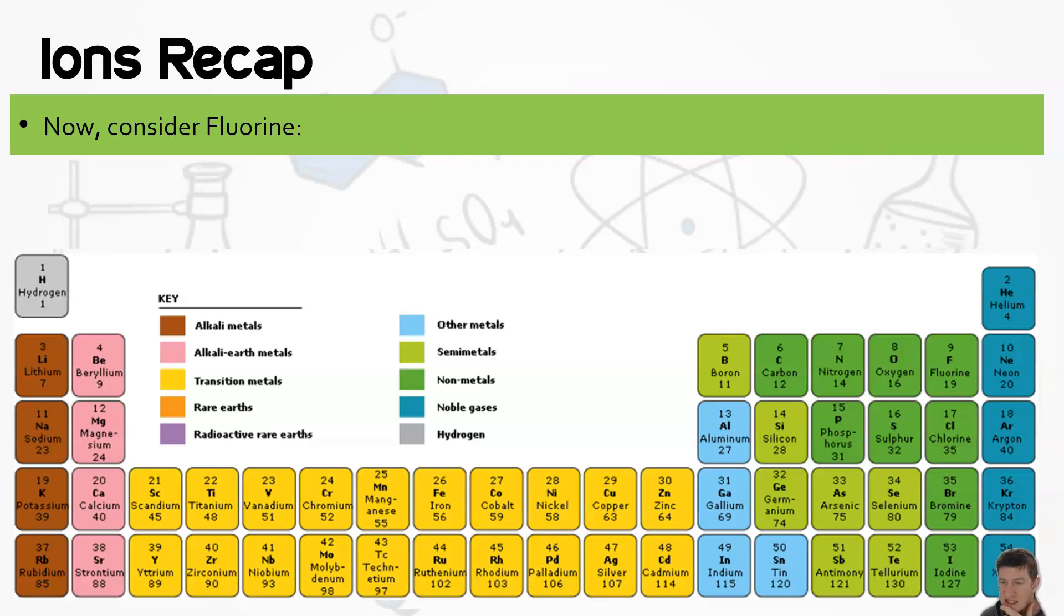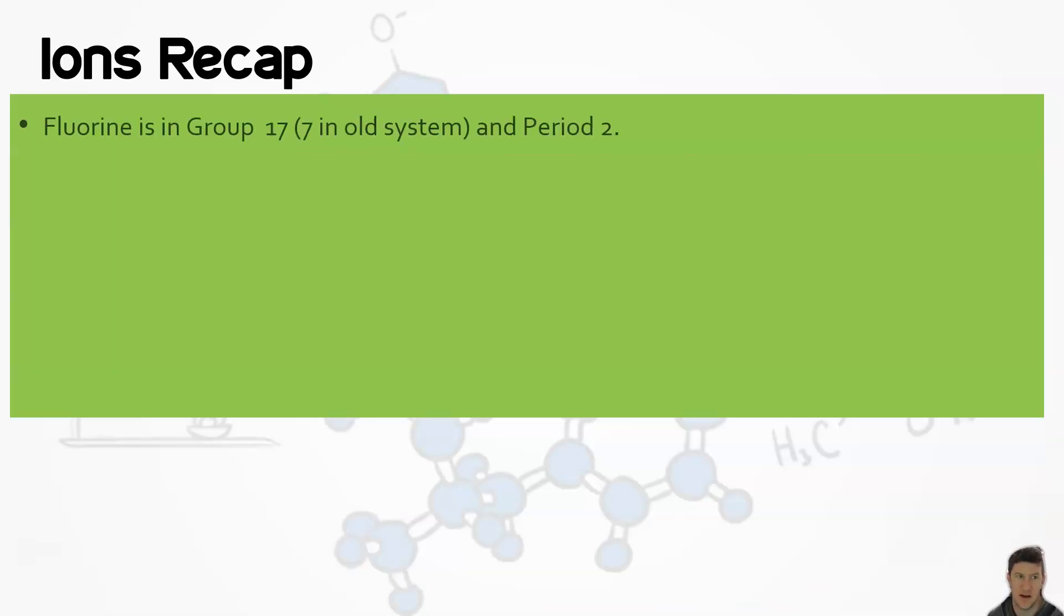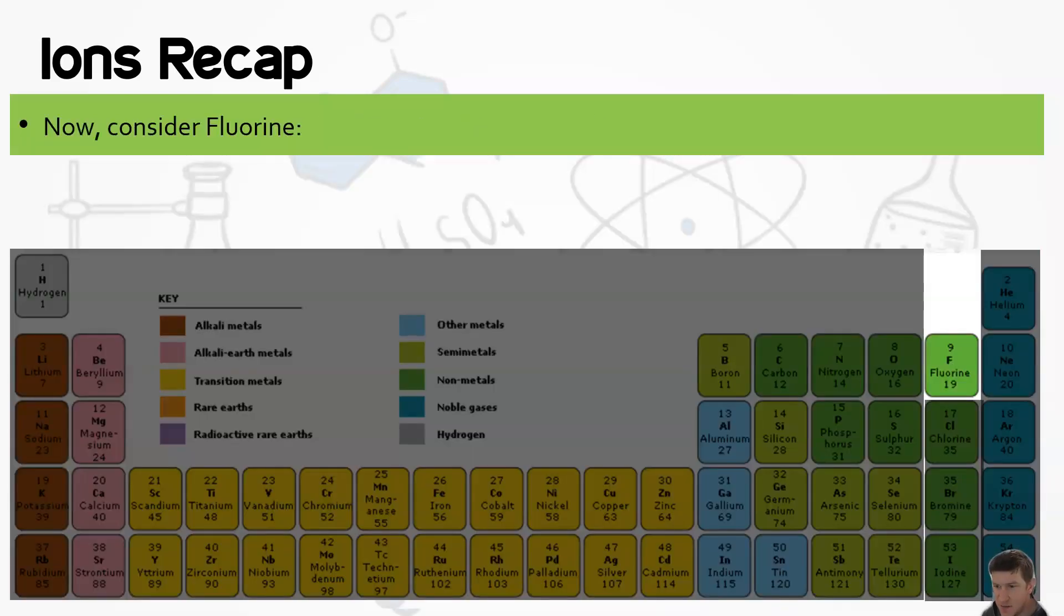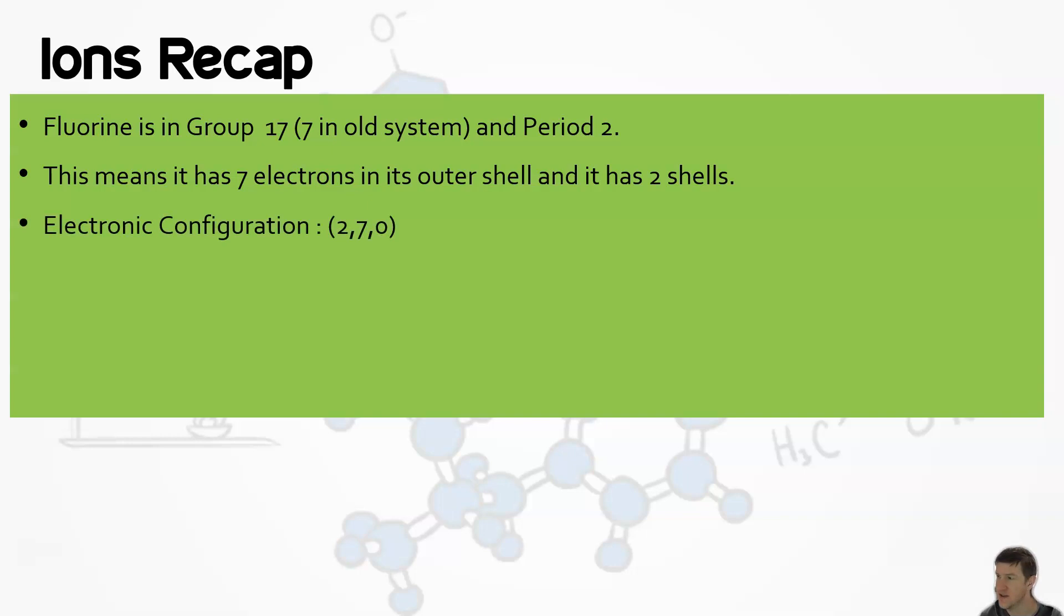So let's look at some examples. Let's consider fluorine. Fluorine is over here, number nine. It's in group 17 in the old system. Remember you go one, two, it includes this three, four, five, and so on, 17. So it's in group 17, period two. That means it has seven electrons in its outer shell and it has two shells. So its electronic configuration would be (2,7,0).